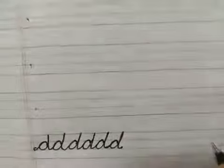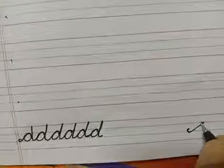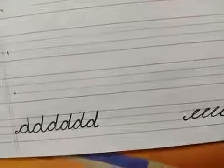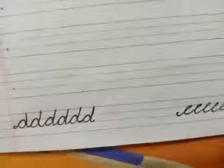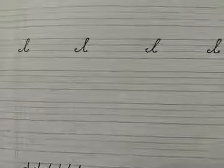Next, we are writing here small letter E — joining small letter E. Make curve. Slot line, come back. Make curve. Slot line, come back. Say and write. Write in a proper way, neat and clean.